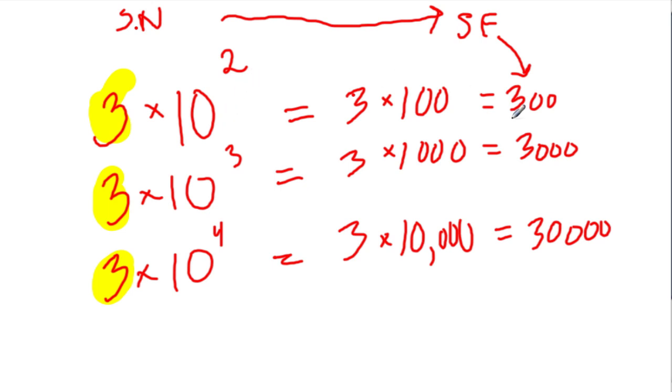Instead of 3 times 10 to the second, we get 300. Instead of 3 times 10 to the third, we get 3,000. Instead of 3 times 10 to the fourth, we get 30,000.